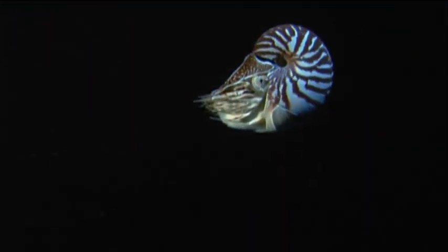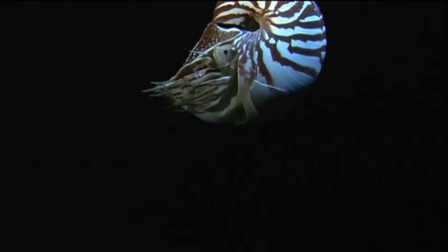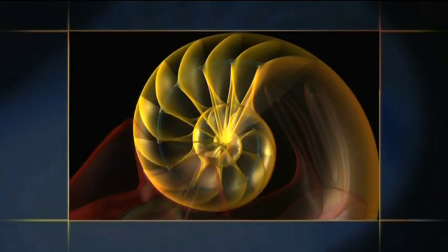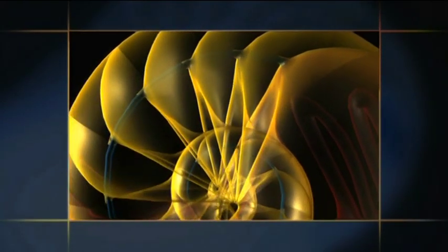In order to stay buoyant as it grows, the Nautilus must remove this seawater from its shell. To do so, it uses a tube called the siphoncle, which spirals through every chamber.